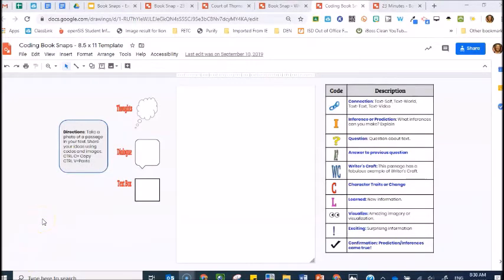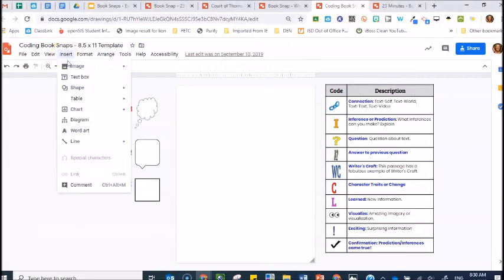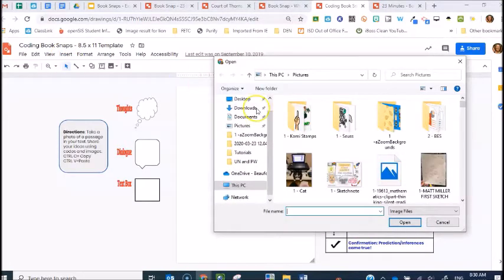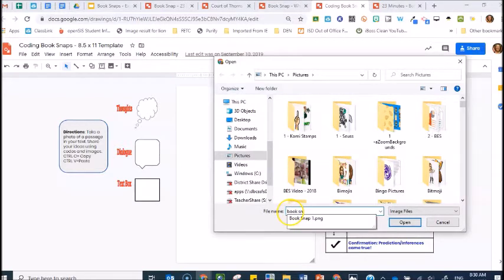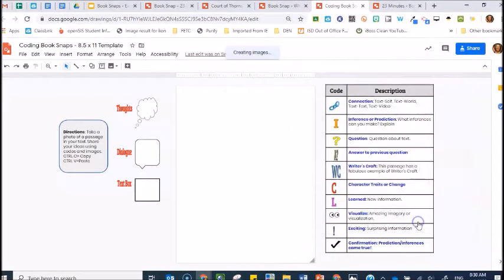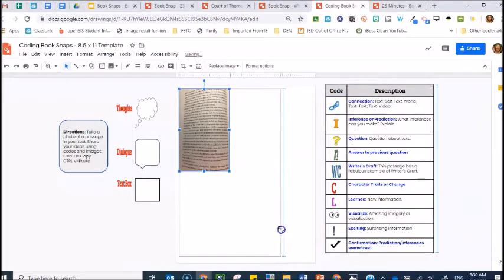Next, you'll need to insert your picture. If you took a photograph, you will simply go to insert image from your computer, you will locate your book snap and then stretch it to fit the canvas.